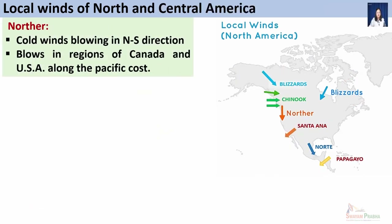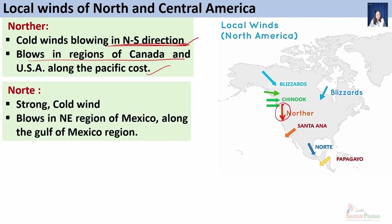Another important local wind of North America is Northerly, which blows along the western coastal region of USA from north to south, bringing cold conditions. Then there is Norté, a strong cold wind in the northeast Mexico region along the Gulf of Mexico and Caribbean region, blowing from cold highland regions of Mexico towards the coastal areas.